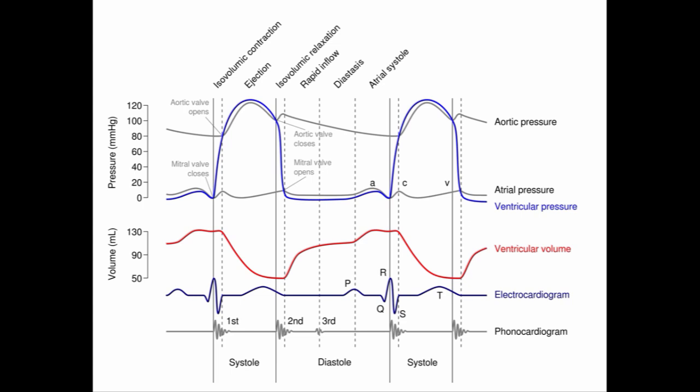The first curve I want to point out is the electrocardiogram, and we're mainly going to use this as the timer for systole and for diastole. You should realize that the QRS complex is the beginning of systole, and the T wave is in the diastolic period, so this will help us follow the other curves in this picture with respect to timing.